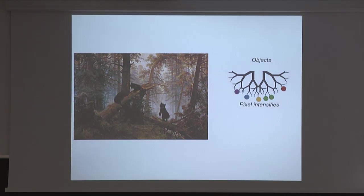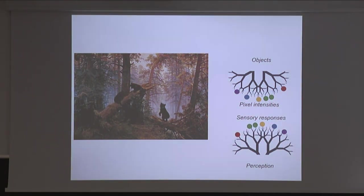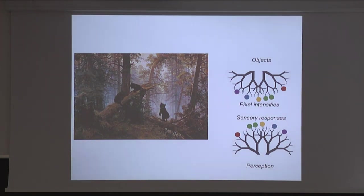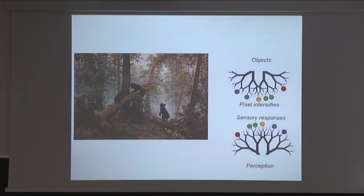The job of our nervous system is to reconstruct this. We receive detailed measurements corresponding to, say, intensities of light across our sensors, and the job of the brain is to figure out what are the hidden causes that led to those observations. One of the recurrent themes for today's discussion is that both natural scenes and the nervous system have opposing, matching hierarchical organization.